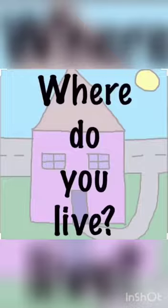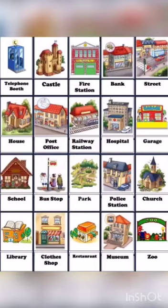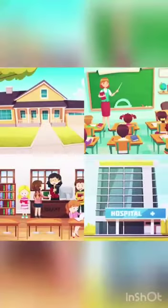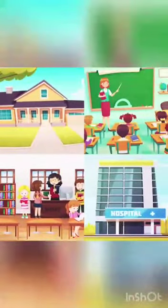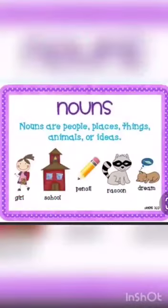Now where do you live? You live in a house. So a noun can be a name given to a place, like a house, a classroom, a library, and a hospital. So these are names of places and thus nouns.